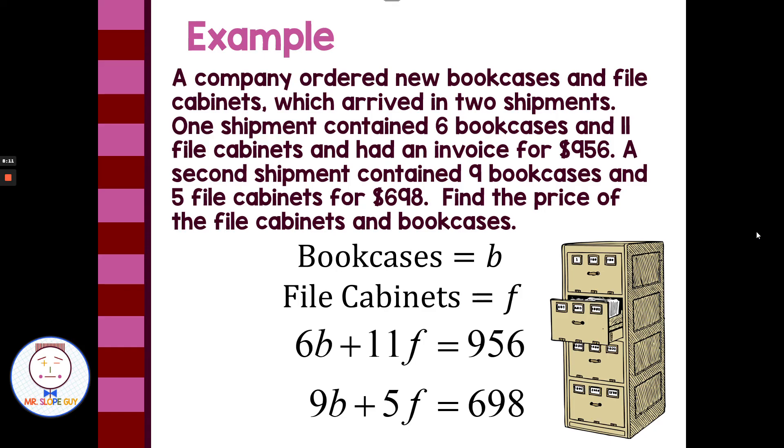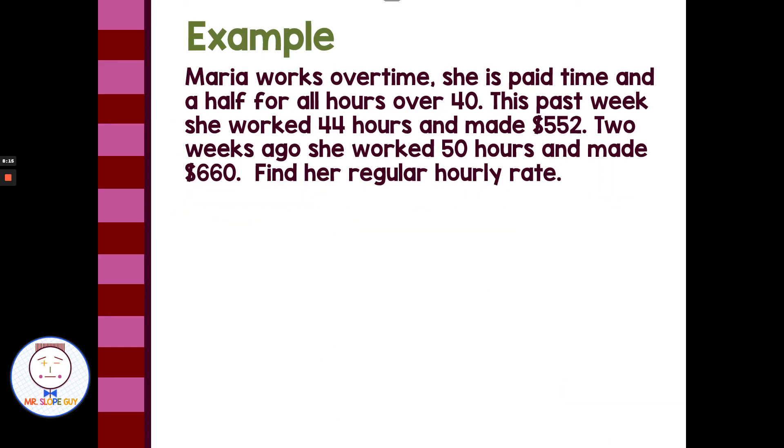All right, let's do one last example here. We have Maria works overtime. She's paid time and a half for all hours over 40. This past week, she worked 44 hours and made $552. Two weeks ago, she worked for 50 hours and made $660. Find her regular hourly rate. So as with most jobs, they'll pay you a salary for the first 40 hours, and then any time over that, they'll pay you a higher rate, normally like a time and a half. So we know that she has two different rates going on here. So one rate for the first 40 hours and then the second rate for everything over 40 hours. So our two variables are going to be the regular rate, we'll call that R, and her overtime rate, we'll use T for overtime.